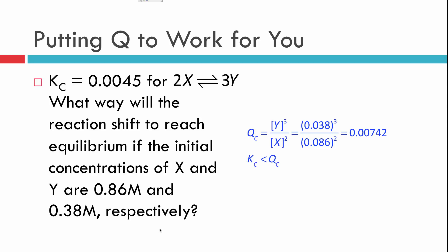So when Q is larger than K, Q is going to have to decrease to end up equaling K. And the only way for Q to decrease, because it's got products in the numerator and reactants in the denominator, the only way for this to get smaller is if we use up some of the products to make some reactants. This reaction shifts left to reach equilibrium, shifts towards reactants.